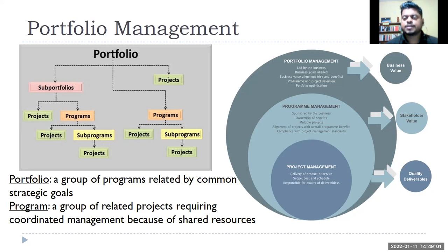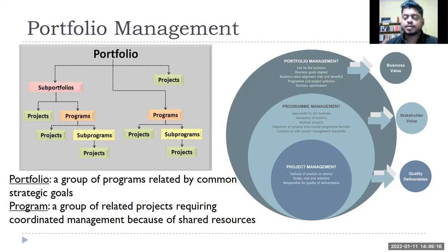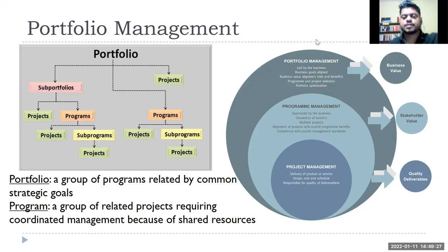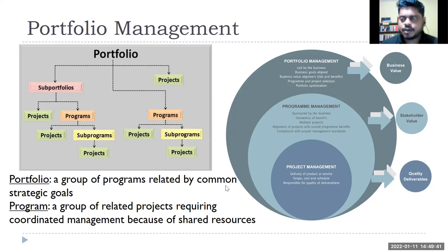A portfolio manager looks at the overall company value and is not worried about whether some project is delayed or overrun — they're focused on achieving the overall company objective. A program manager at the strategic business unit level is much more interested in whether they're adding value to that particular business. Under the program manager there might be multiple project managers — this is how it works.